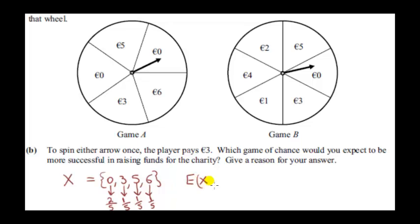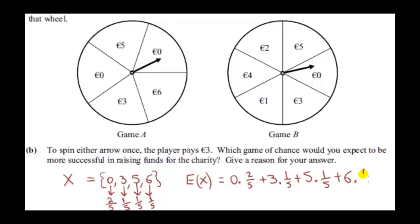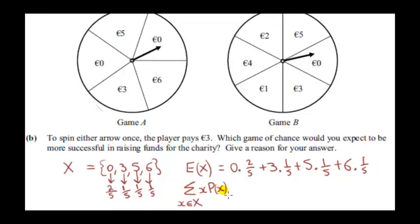The expected value of the winnings is calculated by multiplying all possible values of X by their corresponding probabilities and summing. So the player could win zero euros with probability 2/5, or three euros with probability 1/5, or five euros with probability 1/5, or six euros with probability 1/5. On average, when a player spins the arrow for Game A, they win two and four-fifths euros.